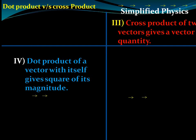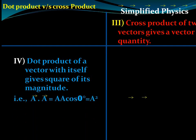The dot product of a vector with itself gives the square of its magnitude. For vector a, a·a = a·a·cos0° = a² since the angle between the same vector is 0° and cos0° = 1. So the dot product of a vector with itself equals the square of its magnitude.